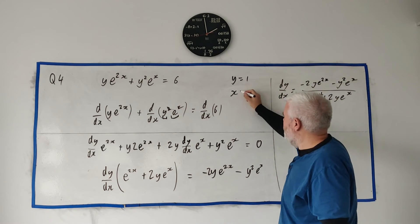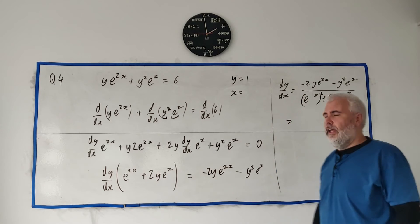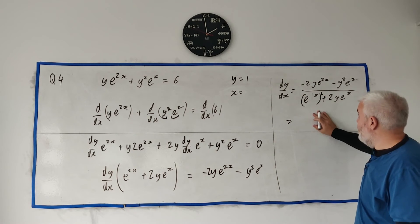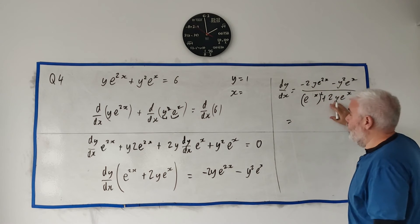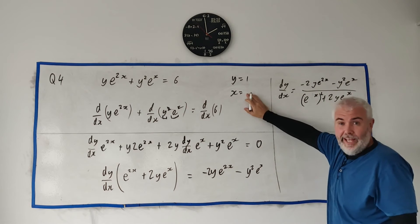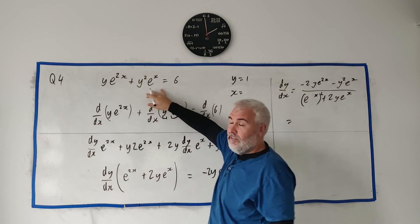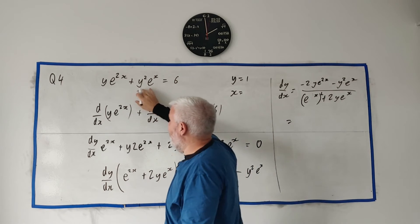They never give us x. They usually would in a question like this. Or they might ask us to find it ourselves. At this point, all we need to do is fill in x and y. So I really want to know what x is. We know what y is, and we have an equation right here. So it should be quite easy to find x.